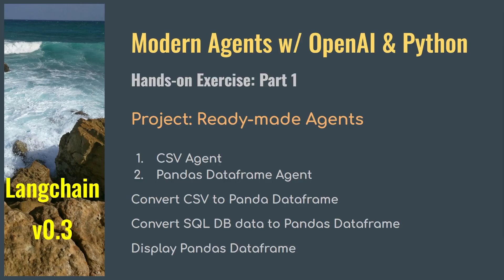Welcome to the series Modern Agents. This is where we learn hands-on how to create and use Langchain Agents. When I say Langchain, I mean the latest version 0.3, which came out just recently. In this version, we do a lot of things differently. In this series, we'll mostly use OpenAI Models and Python to create our custom agents, and later we work on multi-agent orchestration using Langraph.